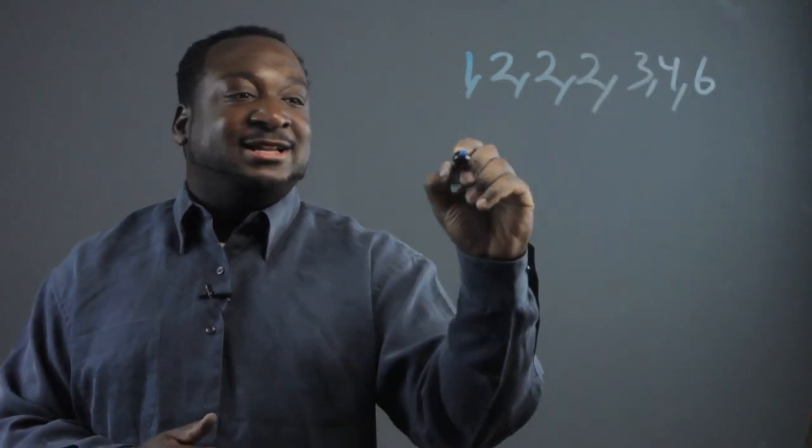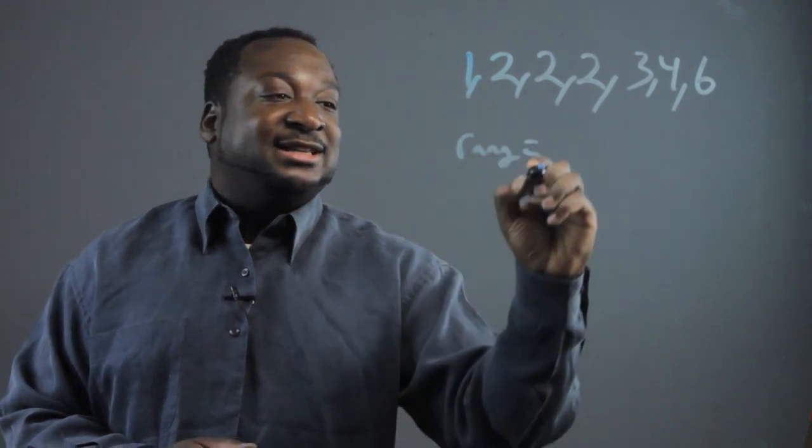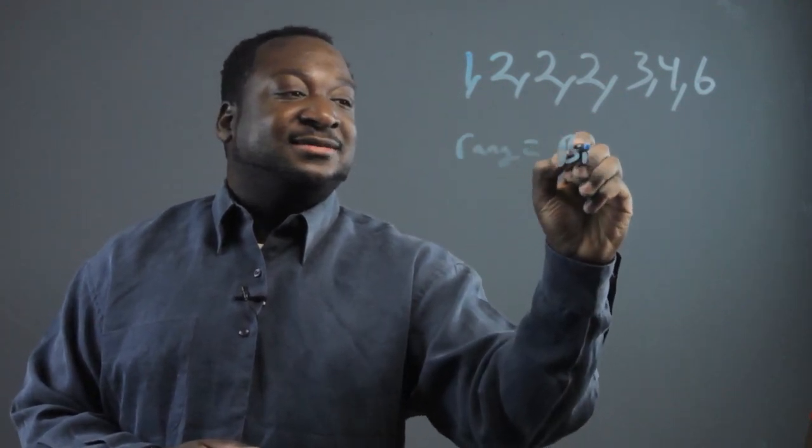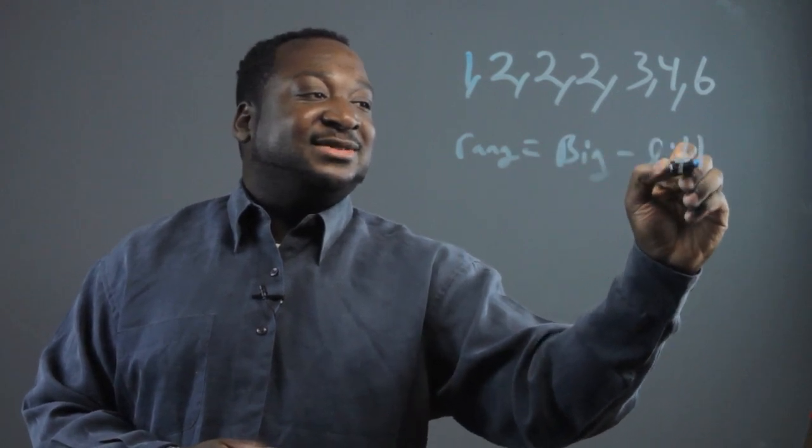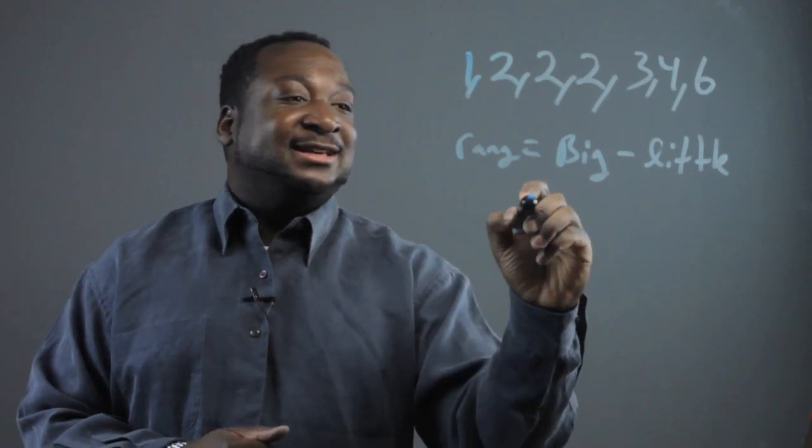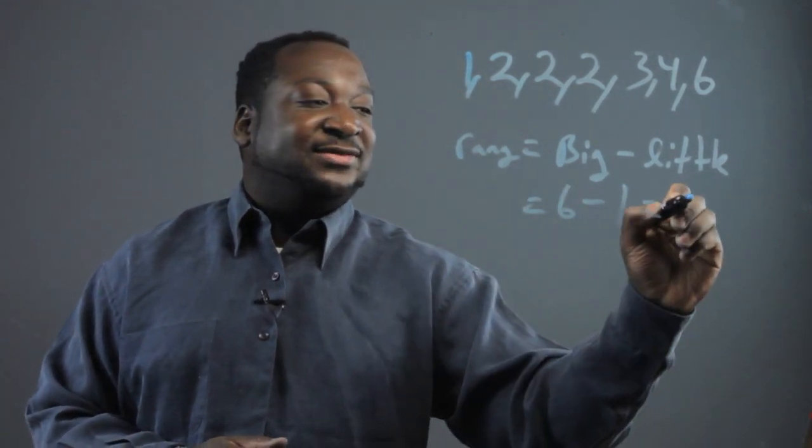Now the range, by definition, is equivalent to the biggest number minus the littlest number. In this case it's 6 minus 1, which is equivalent to 5.